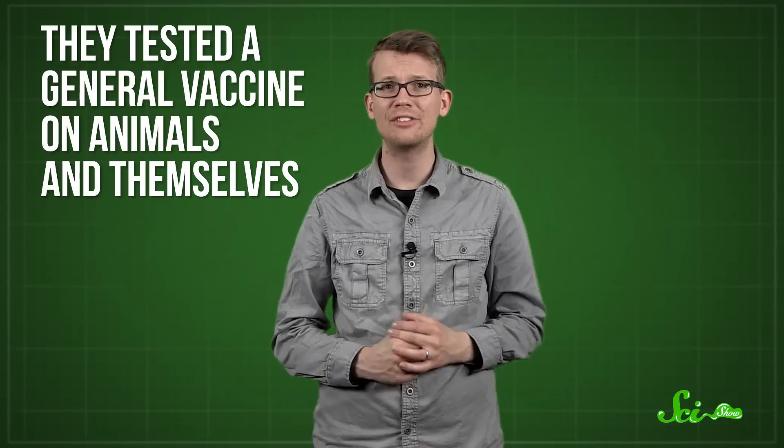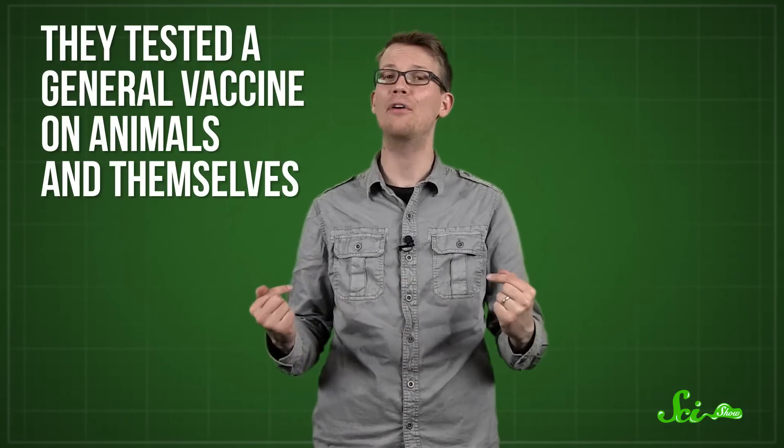Using the whole-cell method in a mix of several local strains of bacteria, Kendrick and Eldering began testing a general vaccine on animals, and themselves, to make sure it was safe. After successfully concocting a general vaccine, they needed to test it in the field rather than just in the lab. So, they launched a citywide field trial in Grand Rapids to find out if the vaccine actually worked. This was problematic, for two reasons.